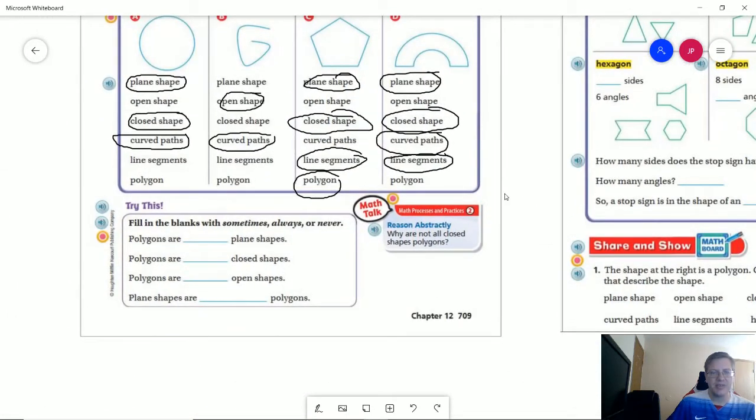So going down to the bottom we have some things with sometimes, always, and never. So polygons are always plane shapes. Polygons are always closed shapes. They are never open shapes.